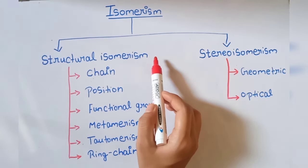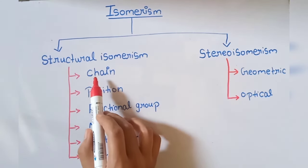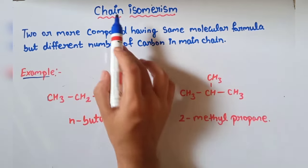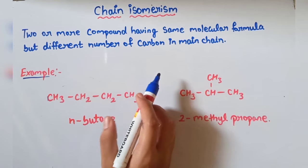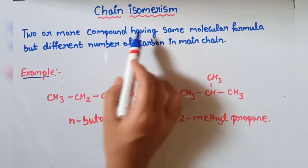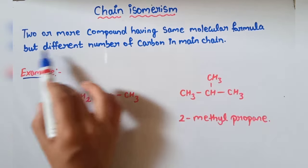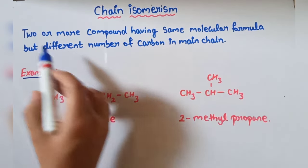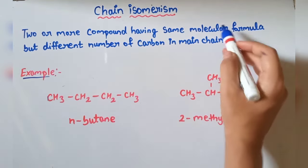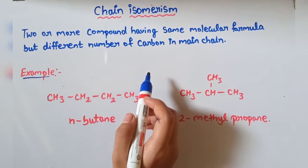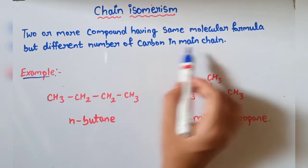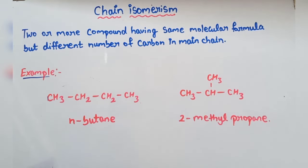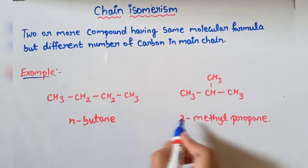Now we will see the first type of structural isomerism, that is chain isomerism. The definition: two or more compounds having the same molecular formula but a different number of carbon atoms in the main chain.